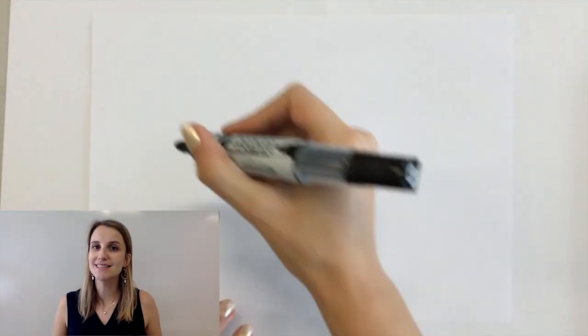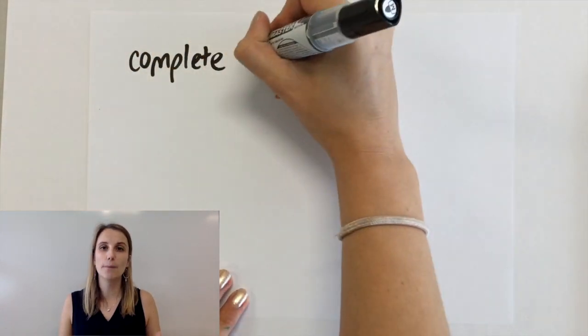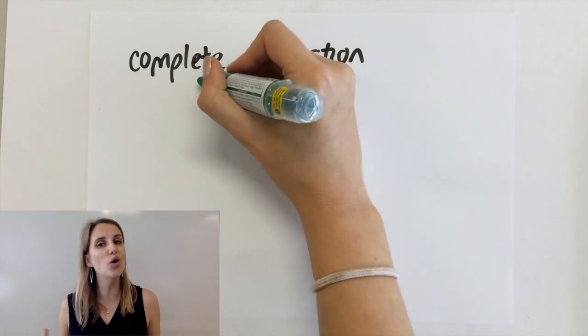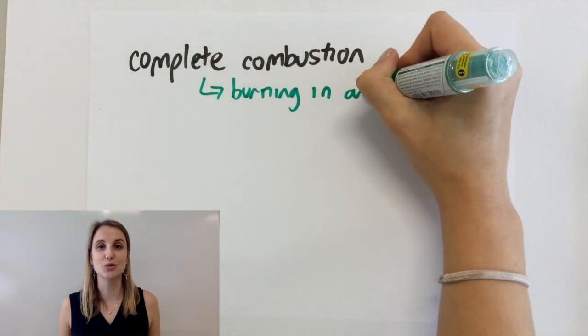If I'm going to burn something completely then that means that I'm going to burn it in an excess of oxygen. That means there's more than enough oxygen for everything to burn.